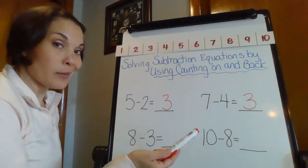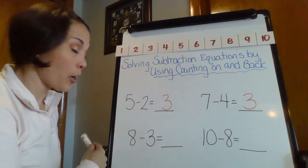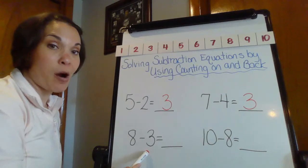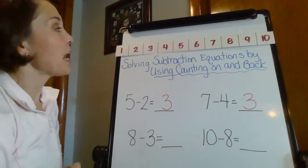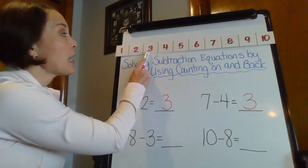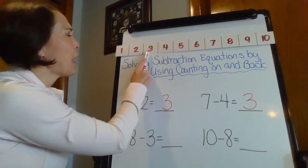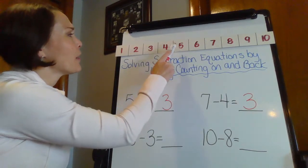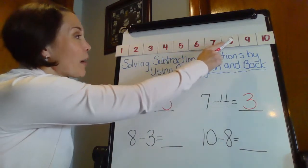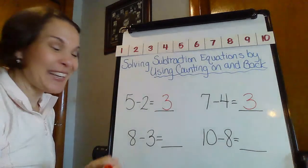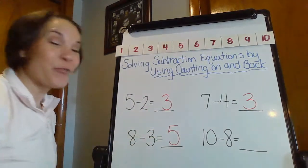So let's do the switcheroo. We're going to count on now. I'm going to start at that part at three and count up to eight. So here we go. Three. How many hops to get to eight? I'm hoping it's five. One, two, three, four, five. There it is. We got that difference of five.